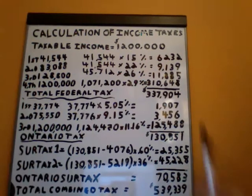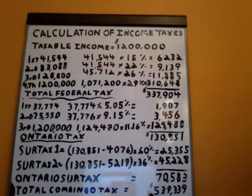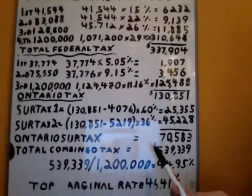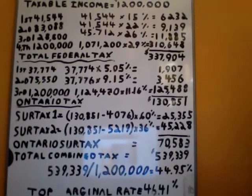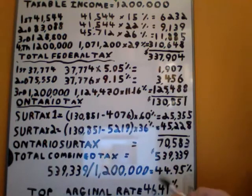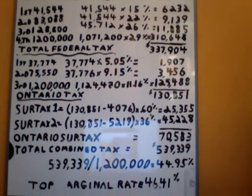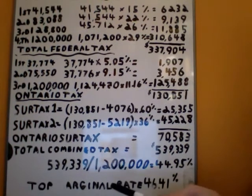We add up the three components — the federal, the Ontario, and the Ontario surtax — and they total $539,399. Now let's divide that by our total taxable income of $1.2 million. That gives us 44.95%, or roughly 45%. So we're getting much, much closer to our marginal rate, which is 46.41%.